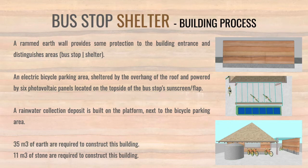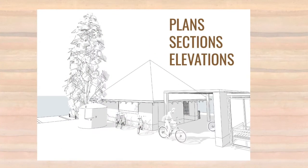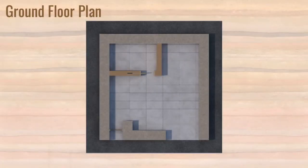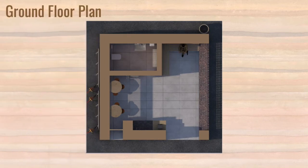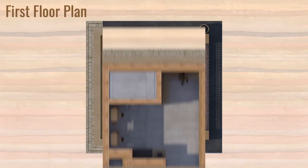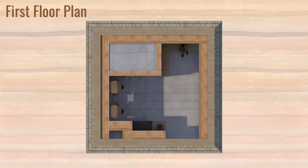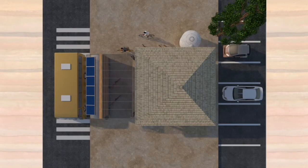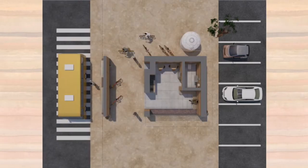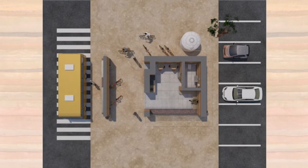A rainwater deposit is built on the platform next to the bicycle parking area. 35 cubic meters of earth are required to construct this building, and 11 cubic meters of stone are required for the footing. This is the ground floor plan, with the bathroom in the back corner, the snack bar area to the left, and the sitting area to the right. On the first floor, there is a small storage area above the bathroom. With this bird's eye view, we can locate the building, bus stop, bicycle parking area, and the water deposit.